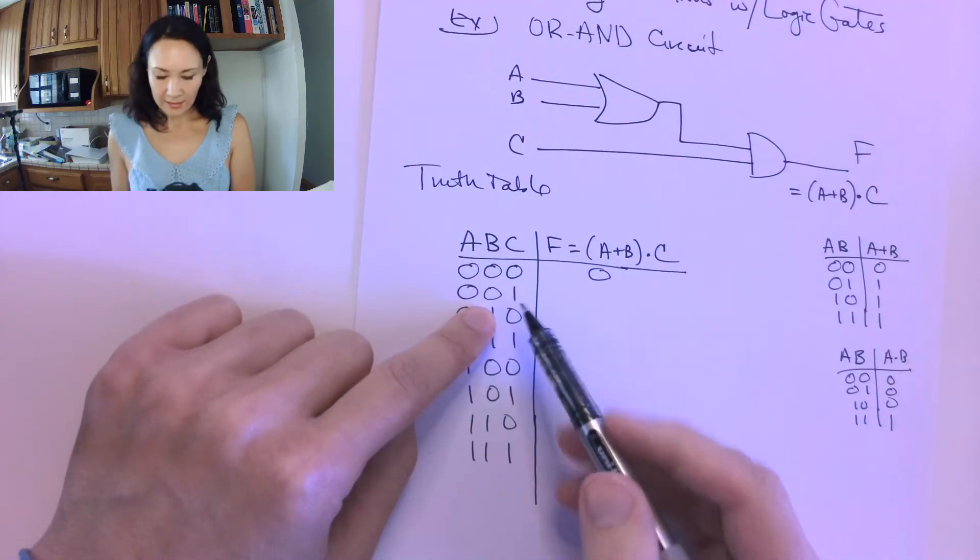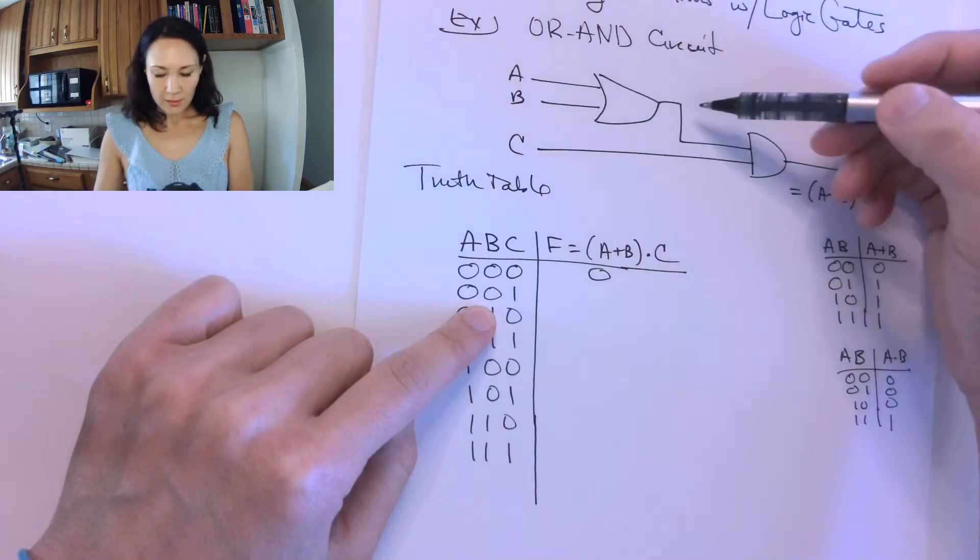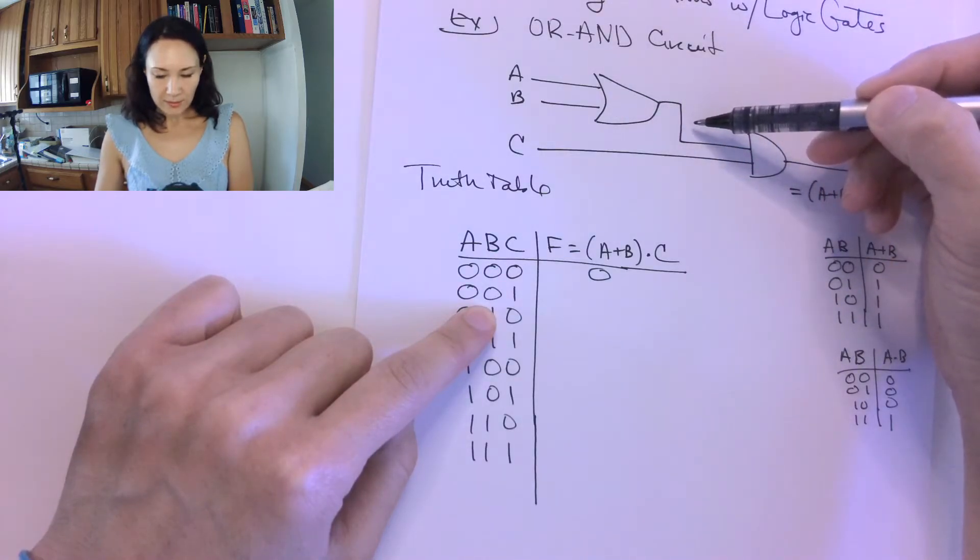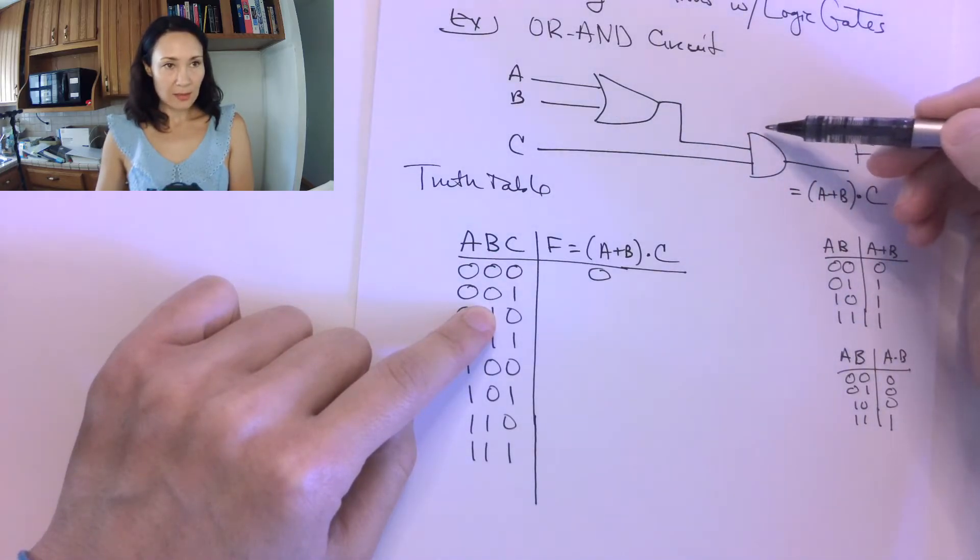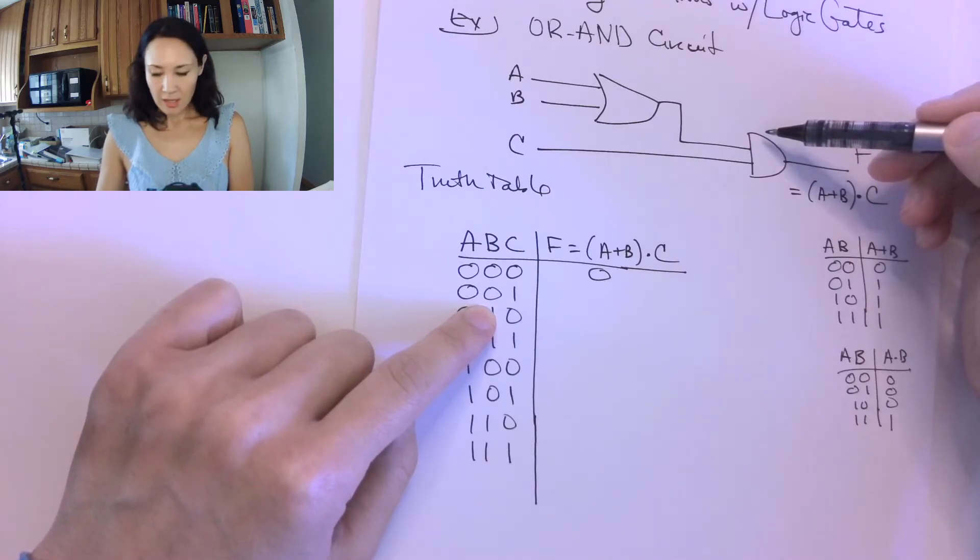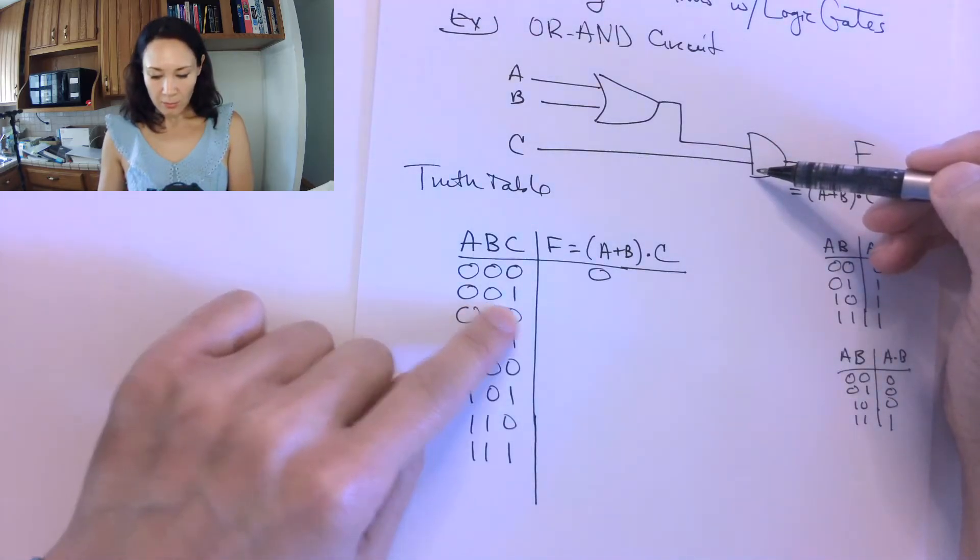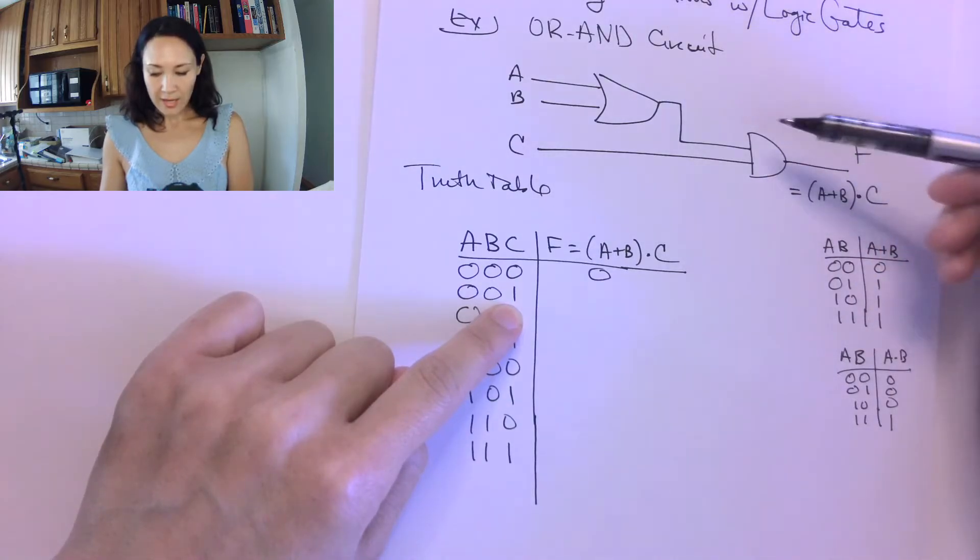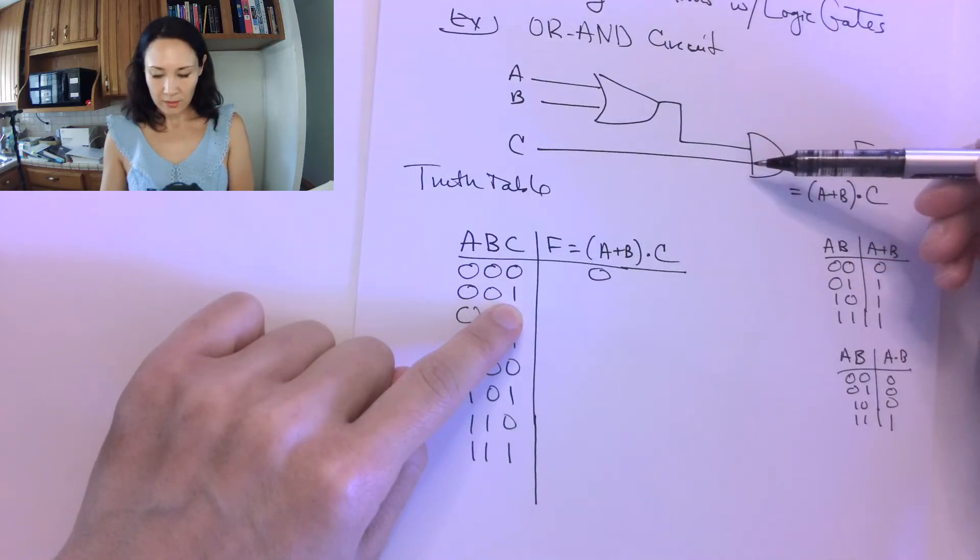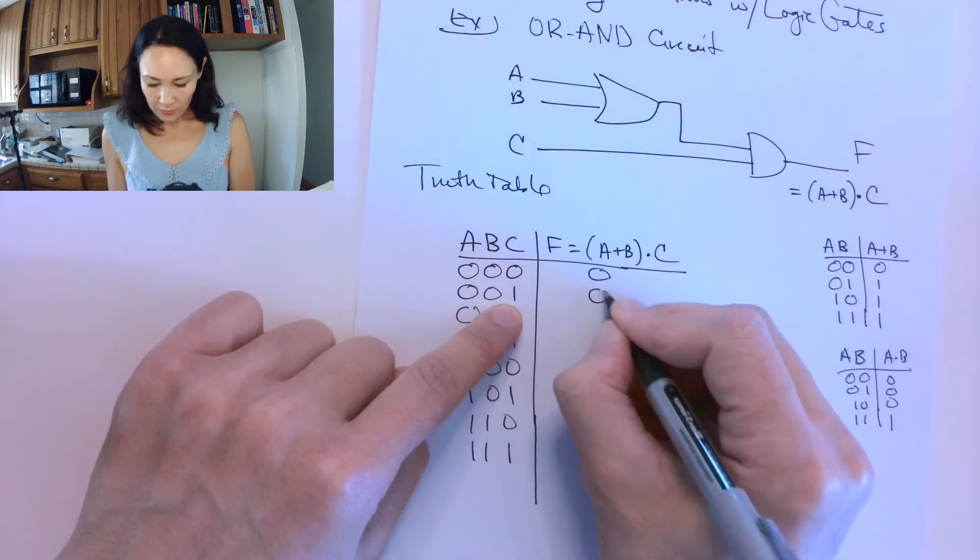The next case, we have 00 coming into the OR. So the result of the OR is going to be a 0. That 0 gets piped in as an input to the AND gate. But then our other input line, C, is going to have a 1. So the input to our AND gate is 0 and 1. 0 and 1 is also 0.